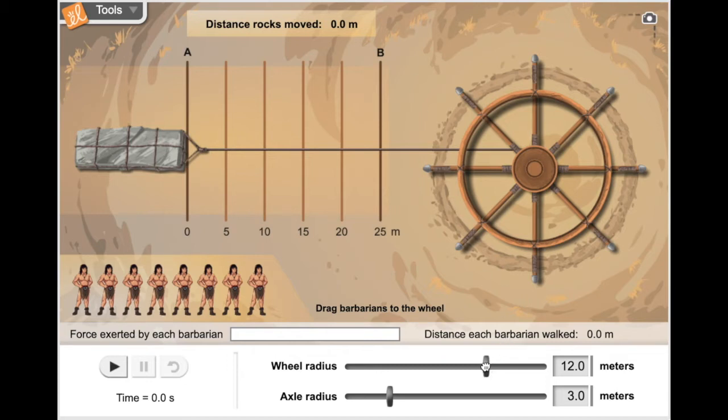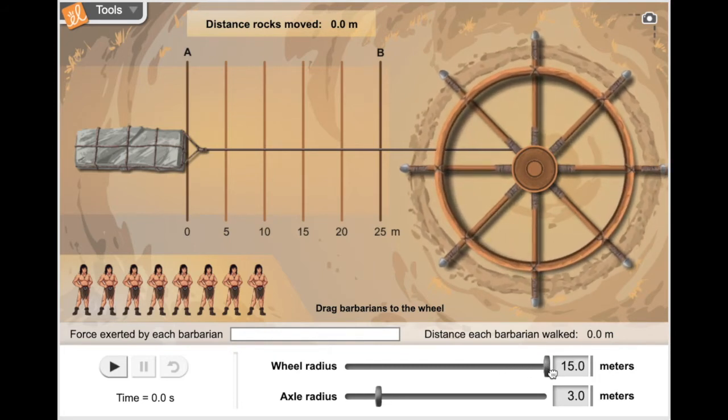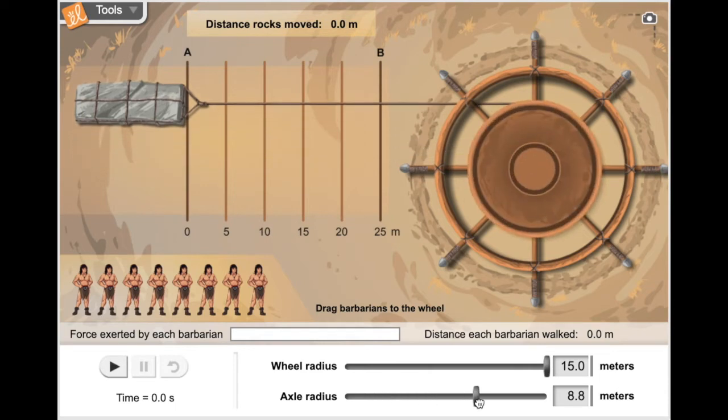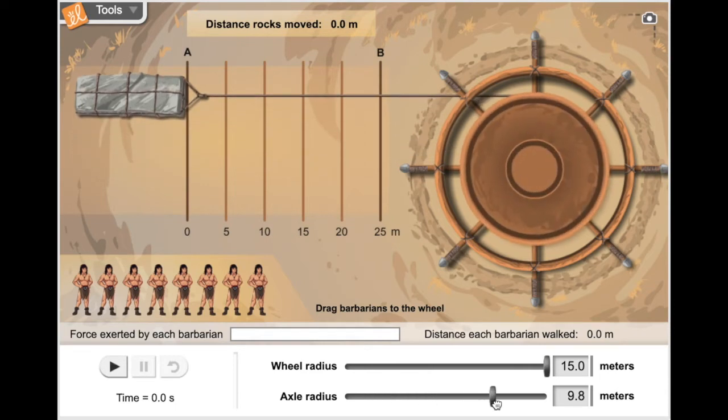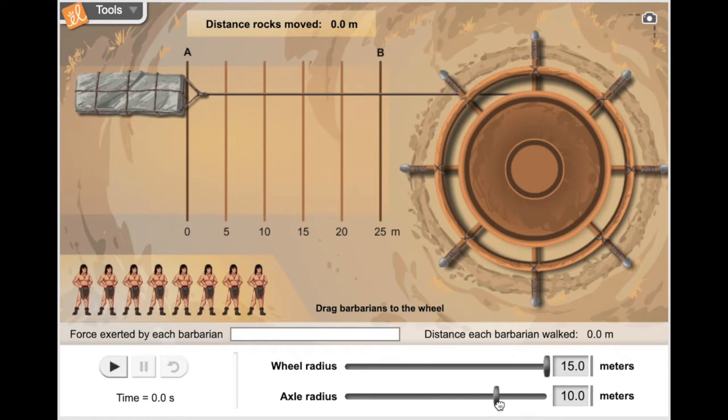We're going to set the wheel radius to 15 meters and the axle radius to 10. So the wheel-to-axle ratio is 1.5.